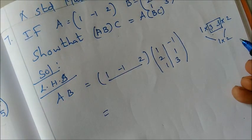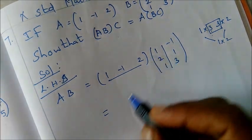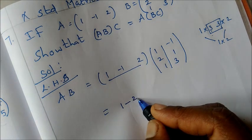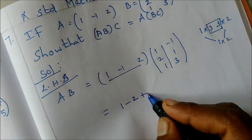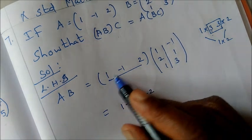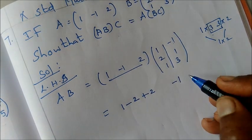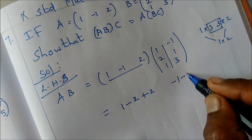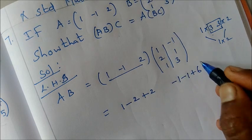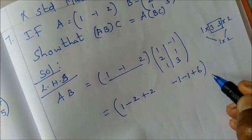Now multiply A and B. First row, first column: 1×1=1, plus (-1)×2=−2, plus 2×1=2, giving 1−2+2=1. First row, second column: 1×(−1)=−1, plus (−1)×1=−1, plus 2×3=6.